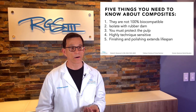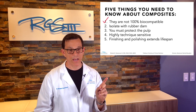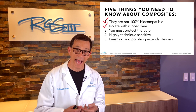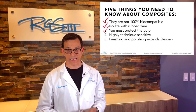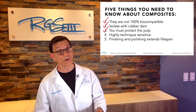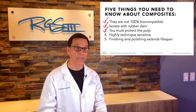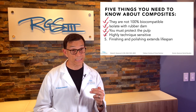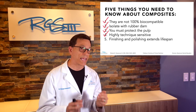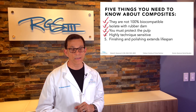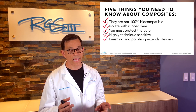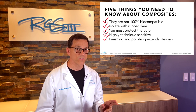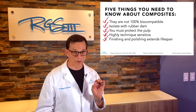So the five things you need to remember about composites: they're not biocompatible 100%. You need to use rubber dam to get the best possible results. You need to protect the pulp, and if the pulp gets exposed, you better know how to deal with it using MTA or an MTA-like product. This is a highly technique sensitive material and approach, so it takes time to do it right. And finally, finishing and polishing is probably one of the most important steps — you need to leave yourself with an incredibly smooth surface to get the best longevity out of the composite.